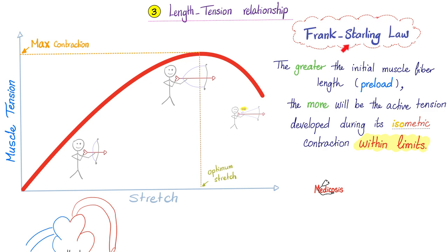And here comes one of the most important laws in medicine: the Frank-Starling Law. The greater the initial muscle stretch, length, or preload, the greater the active tension — within limits. Beyond the tipping point, you start to deteriorate. Notice this is described with isometric contraction because the length of the muscle is not changing; what changes is the tension.